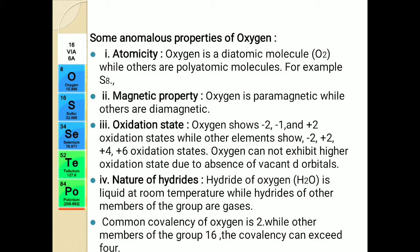But if we consider other members, they are polyatomic molecules. For example, sulfur is S₈ — that means eight sulfur atoms come together to form a sulfur molecule. So oxygen is diatomic while the rest of the members are polyatomic. This is the first anomalous property.